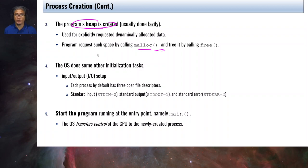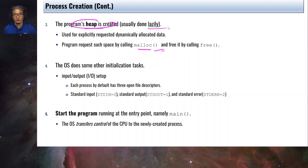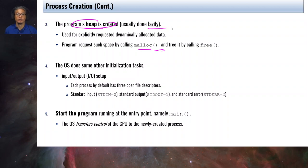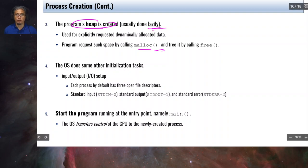This is the third step: allocation of the heap. Usually this is also done lazily — if your code does not call the malloc function, a heap will typically not be created. And even if you have a malloc call in your program, initially during process creation the heap will not immediately be created; it is also performed lazily.